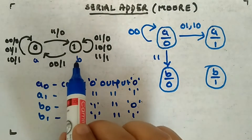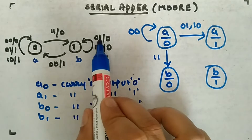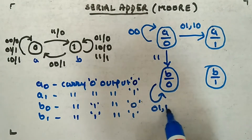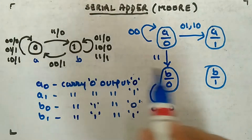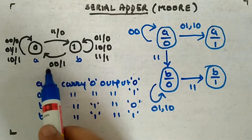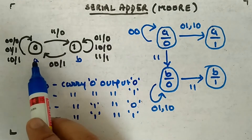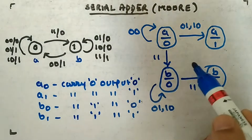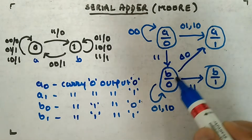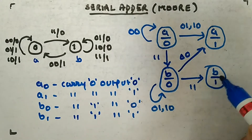Let's look at B0. B with output zero is possible only when inputs are 0,1 or 1,0. B with output one occurs when input is 1,1. The one remaining input is 0,0, and from B0 with input 0,0 it goes to A1. So all four inputs are done for state B0.